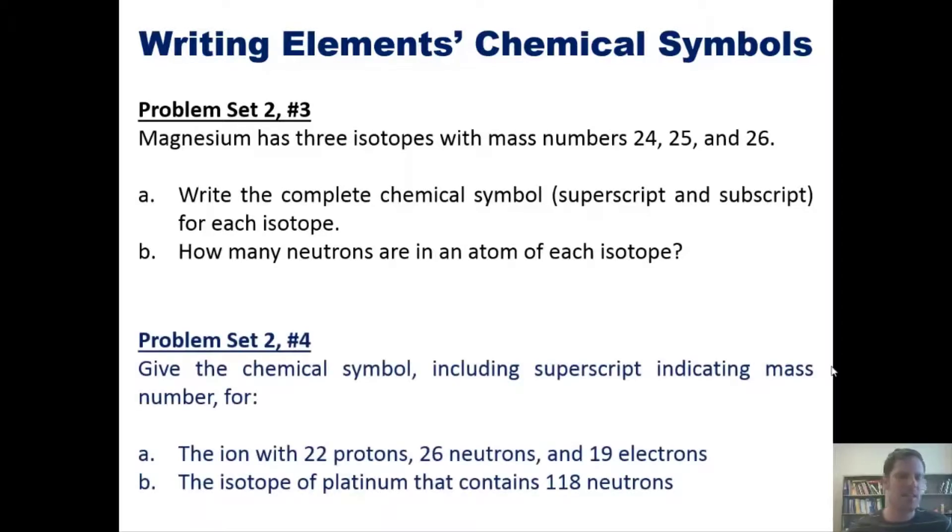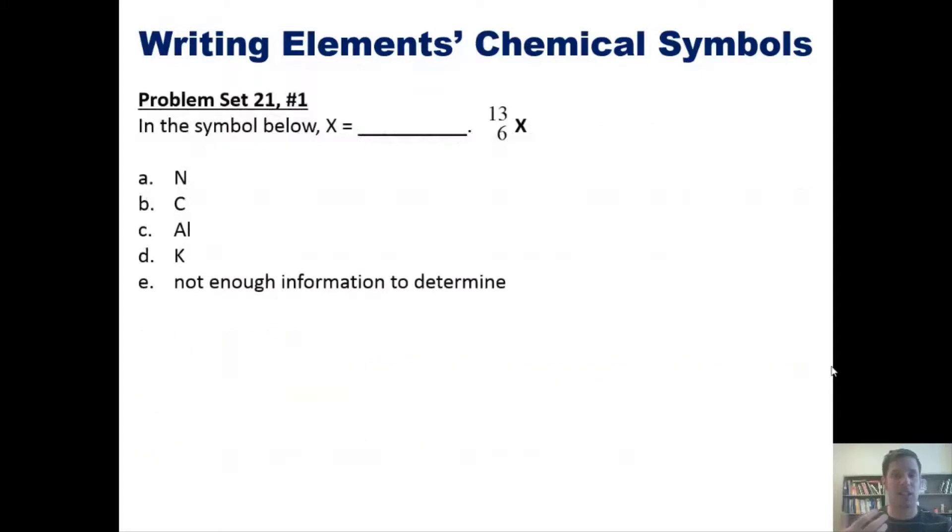Separately, give the chemical symbol including superscript indicating mass number for: first, the ion with 22 protons, 26 neutrons, and 19 electrons; and next, the isotope of platinum that contains 118 neutrons.